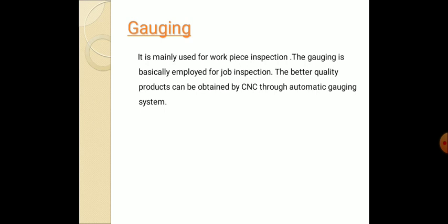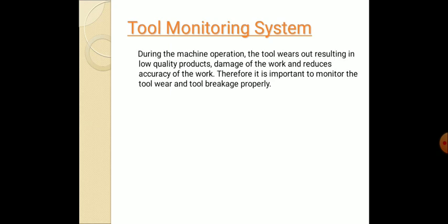Next, the tool monitoring system. What is this tool monitoring system? During the machining operation the tool wears out resulting in the low quality products, damage of the work, and reduces the accuracy of the work. To monitor, to reduce the maximum damages and to improve the quality of products, the tool monitoring plays an important role. Therefore it is important to monitor the tool wear and the tool breakage properly.